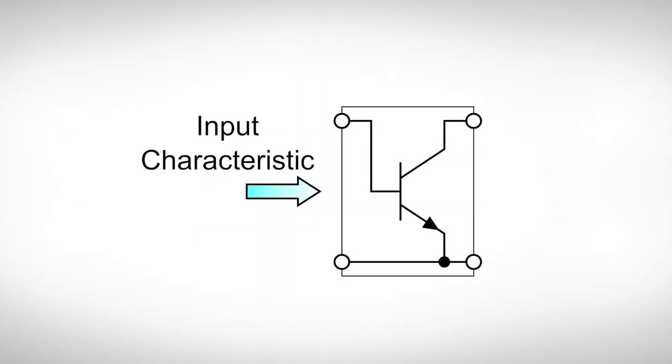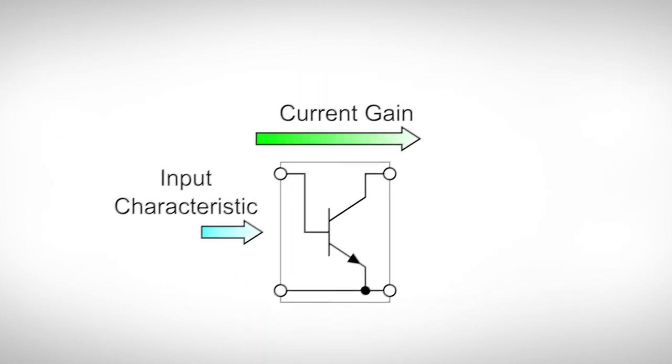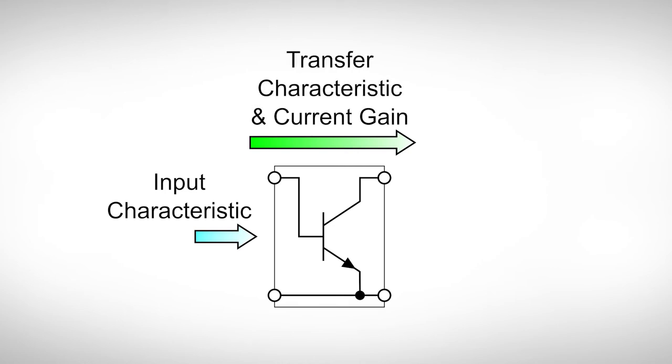How we can use a bipolar transistor in our circuits can be depicted by a couple of different characteristics. These characteristics show the behavior of the transistor from certain perspectives. There are the input characteristic, current gain, transfer characteristic and output characteristic.